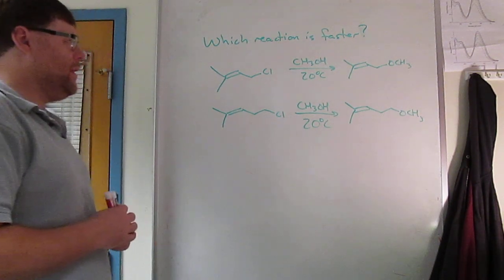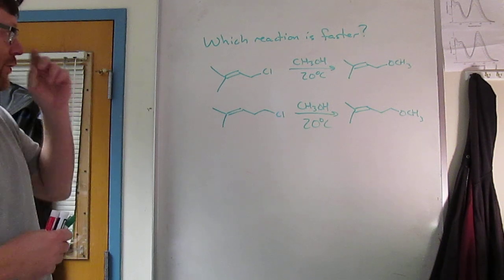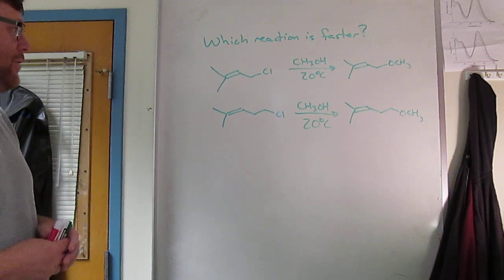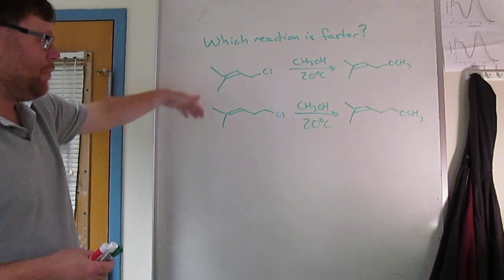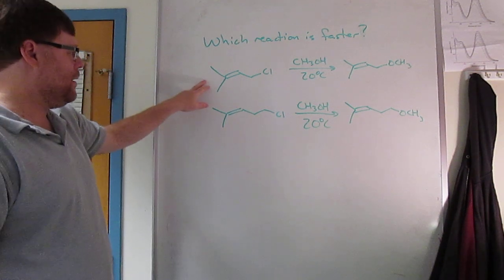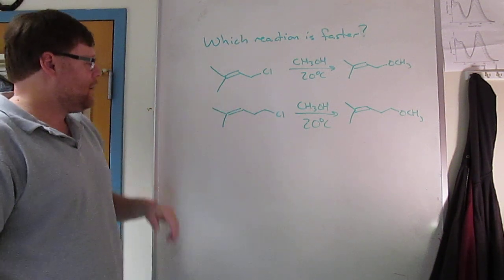In this homework we're going to do a whole series of problems comparing which reactions are faster. I've got two reactions, top and bottom. In the top you have an allylic chloride.